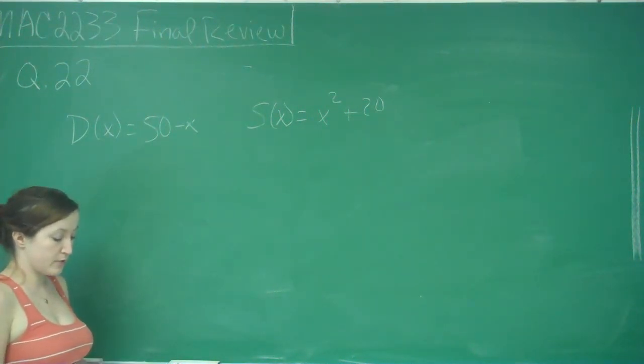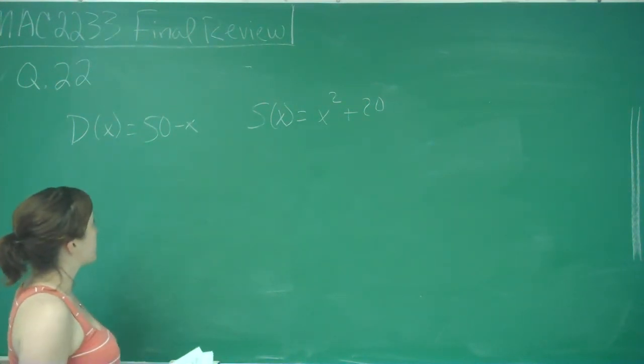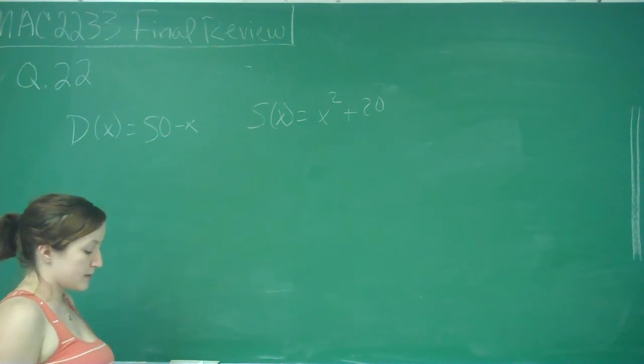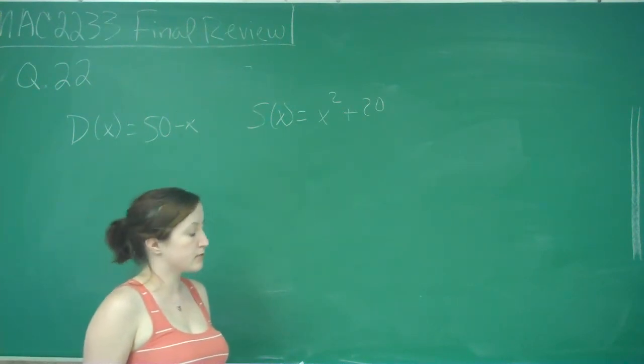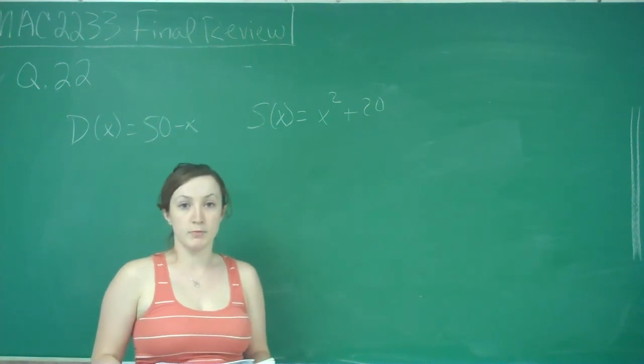So this is question number 22 and it says the demand function for a product is given by d of x is equal to 50 minus x and the supply function is s of x is equal to x squared plus 20. Find the producer's surplus at the equilibrium price.